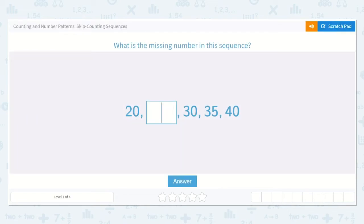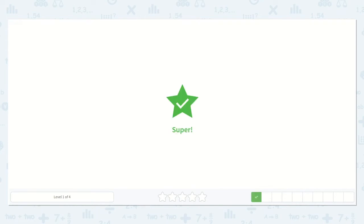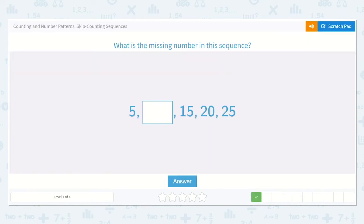Great. Here we have 5 and then a number, 15, 20, 25. All right, so let's see if we can figure out what this missing number is.